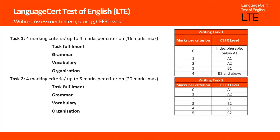The levels of performance for the second task are: 0 if the candidate's response is at A1 level; 1 if it's at A2 level; 2 if at B1 level; 3 if at B2 level; 4 if at C1 level; and 5 if at C2 level.